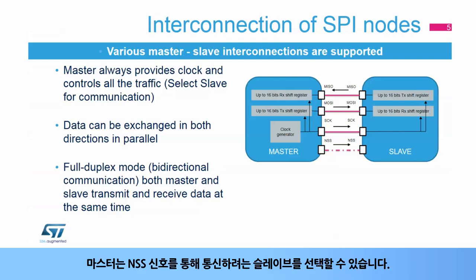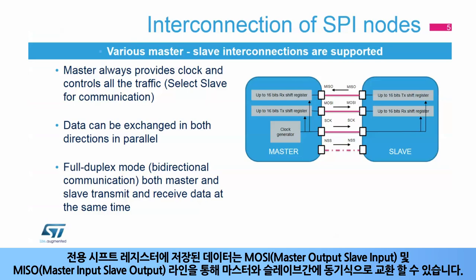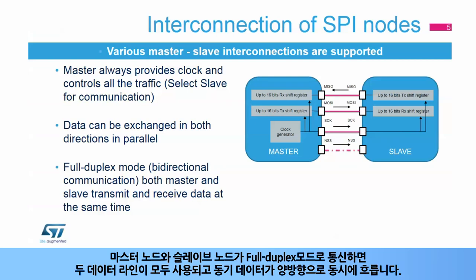The master can select the slave it wants to communicate with through the optional NSS signal. Data stored in the dedicated shift registers can be exchanged synchronously between master and slave through the MOSI, Master Output Slave Input, and the MISO, Master Input Slave Output data lines. When master and slave nodes communicate in full duplex mode, both data lines are used and synchronous data flows in both directions at the same time.